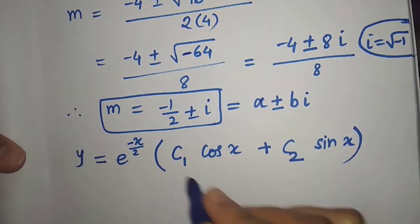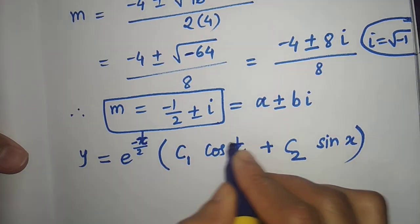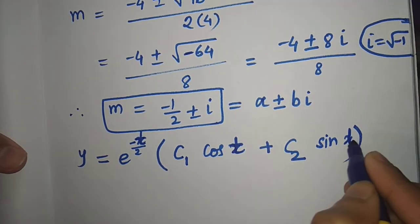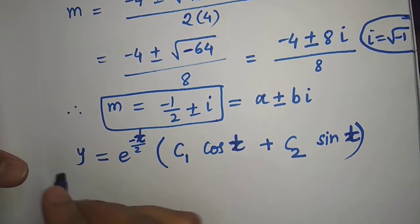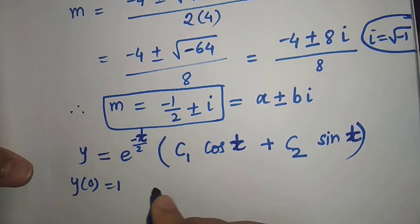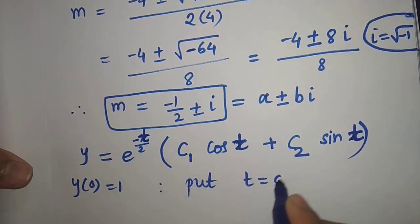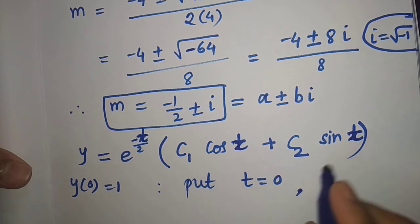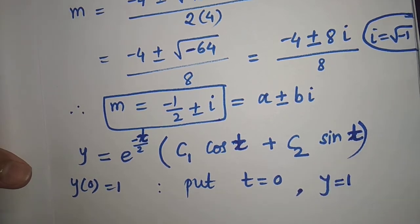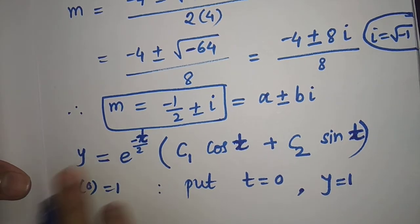Sorry — the independent variable is t, so just replace x by t. The general solution becomes y equal to e raised to minus t/2 into bracket c1 cos t plus c2 sin t. We have given that y at t equal to 0 is 1, so put t equal to 0: the initial value of y is 1.